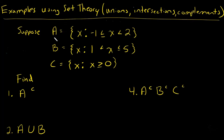We have three sets and we're assuming that the sample space is all real numbers. Set A is X such that X is between negative 1 (including negative 1) and 2. B is X such that X is between 1 and 5 (including 5). And C is X such that X is positive including 0.